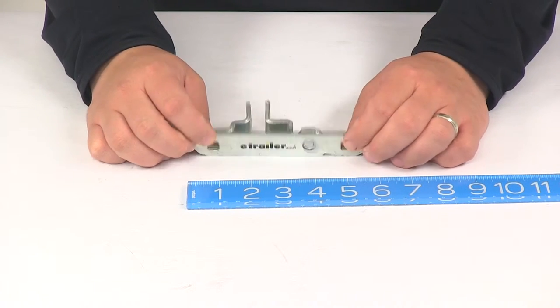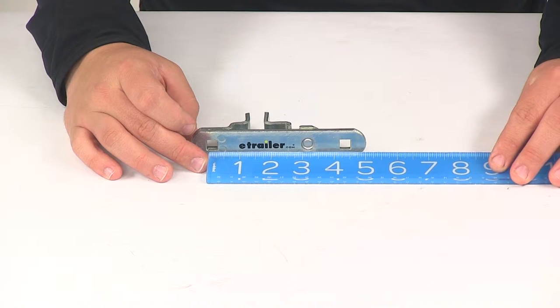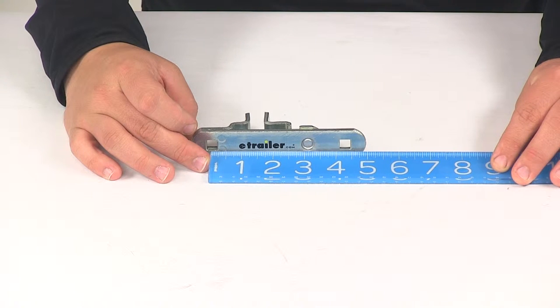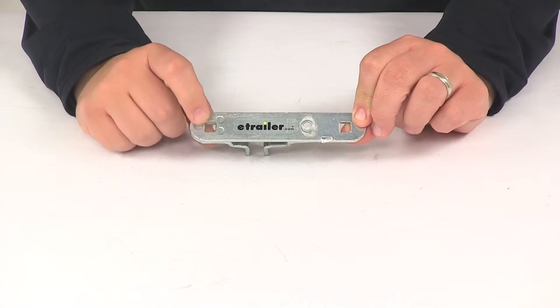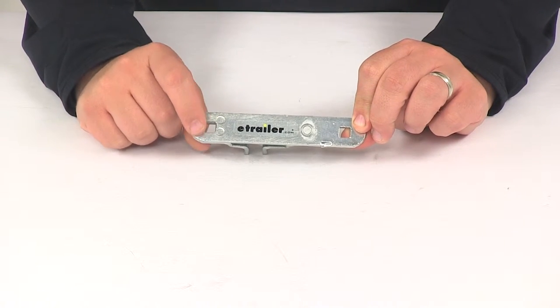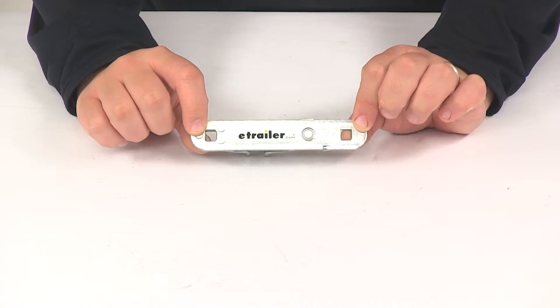If we take a measurement of the distance between the mount holes going center on center, that's going to give us a measurement of about four and one-quarter inches. Now the square holes are going to have a measurement of 5/16 by 5/16. That's the size of the square holes; again, hardware is not included.